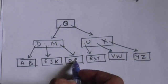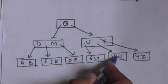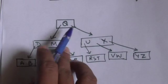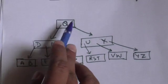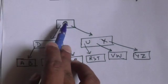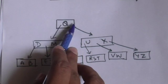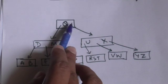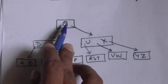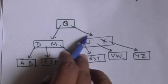Now suppose in this B-tree we have to search the key V. Again we will start from the root node. The root has only one key, that is Q. V is greater than Q, so we will move to the child of the root node which is at the right of key Q.